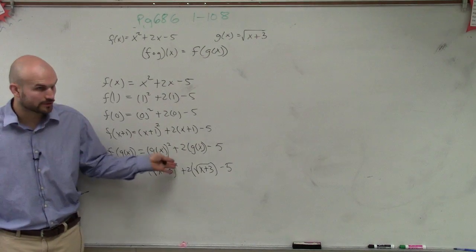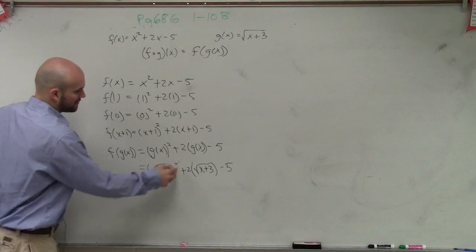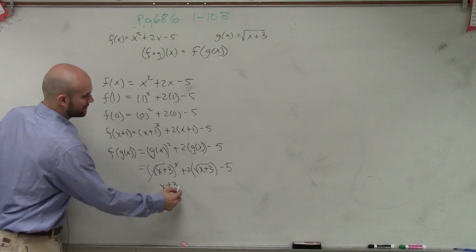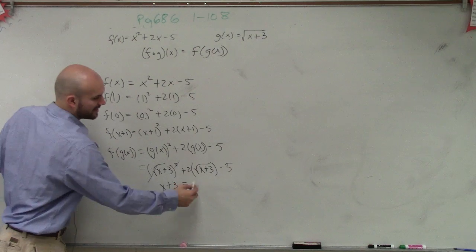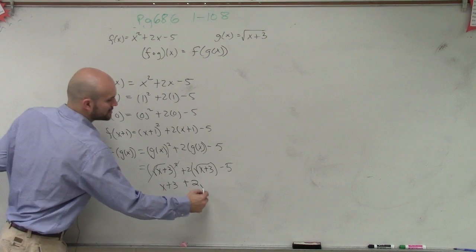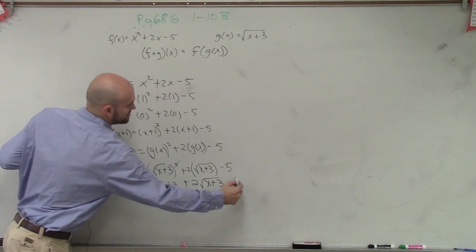Now, the square root of something squared, those are inverse operations, so they'll go to 1. And then I'm just left with x plus 3. Here I can't do anything with simplifying. That's plus, I don't know where equals came in. So it would be 2 times square root of x plus 3 minus 5.